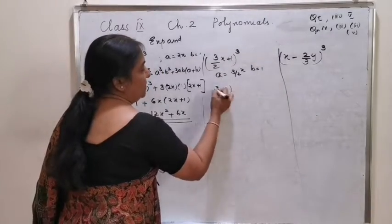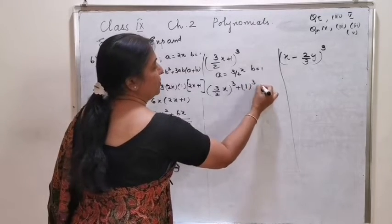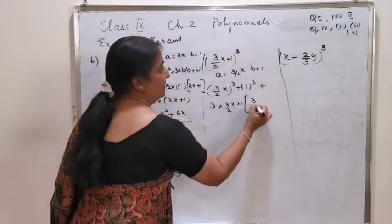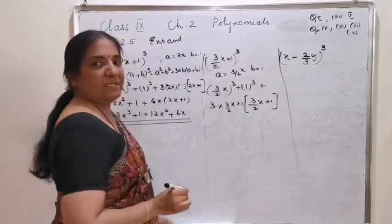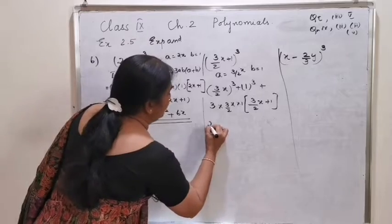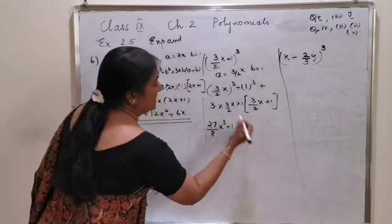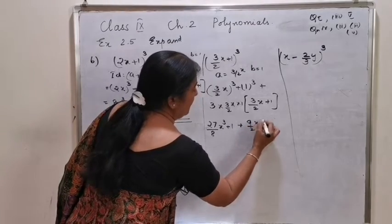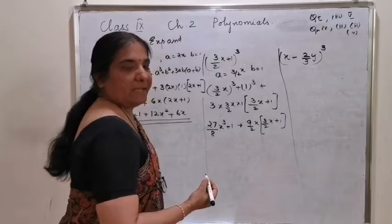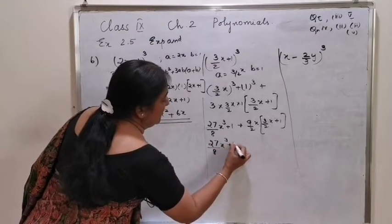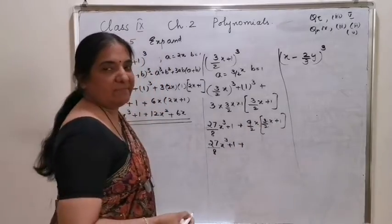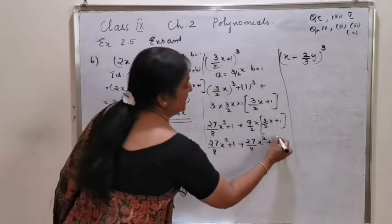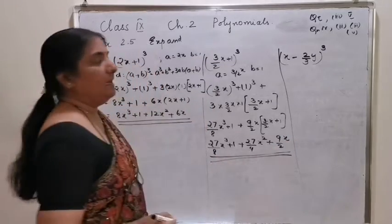Expanding 3 by 2x the whole cube using a cube plus b cube plus 3ab into a plus b: 3 cubed is 27 and 2 cubed is 8, so 27 by 8 x cube plus 1 plus 3 into 3 by 2x is 9 by 2x into 3 by 2x plus 1. Final expansion: 27 by 8 x cube plus 1 plus 9 threes are 27, 2 twos are 4, so 27 by 4 x square plus 9 by 2x. That is the final answer.